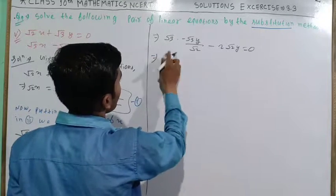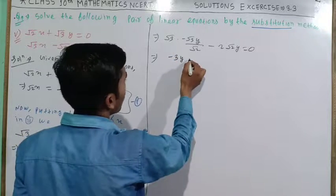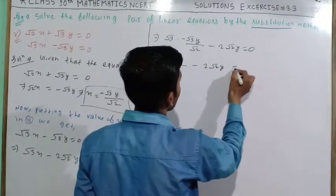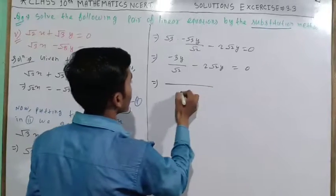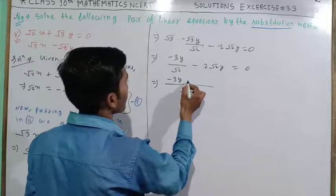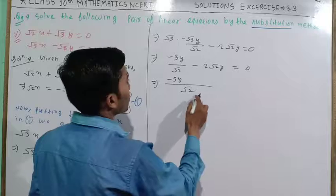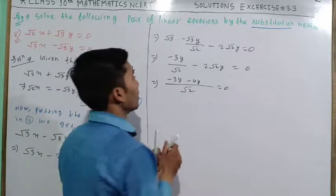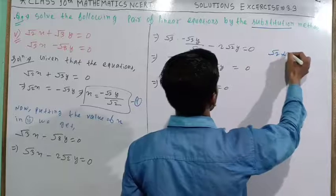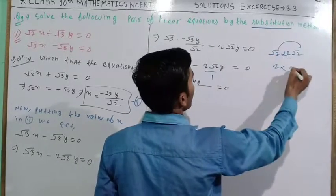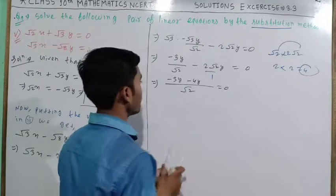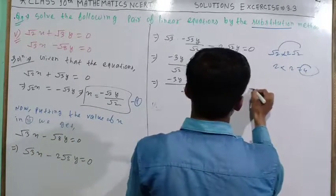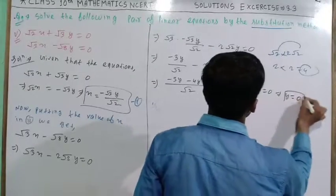This becomes -3y/√2 - 2√2y = 0. Multiplying by √2, we get -3y - 4y = 0. So we have -7y = 0, that implies y equals 0.